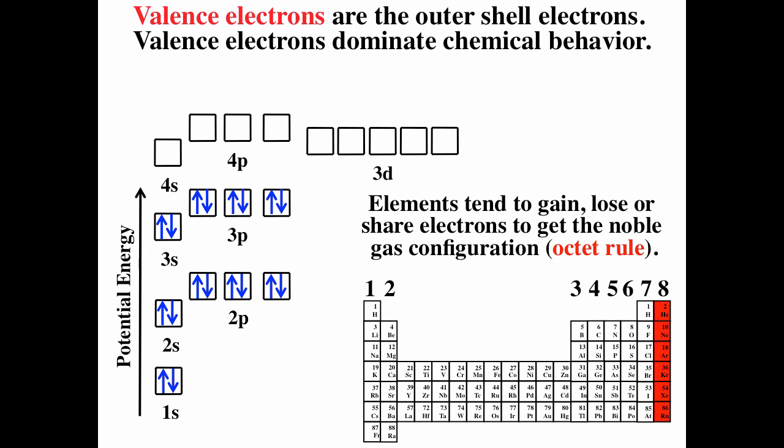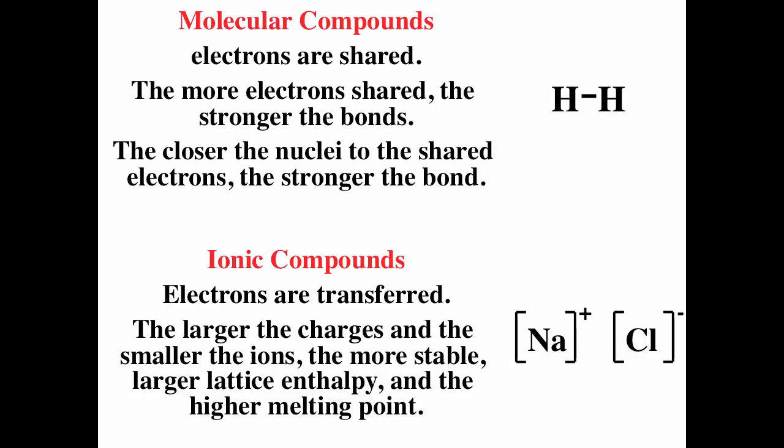This is referred to as the octet rule because all the noble gases, except for helium, have eight valence electrons. Two non-metals can share electrons, both getting noble gas configuration, forming a molecular compound.